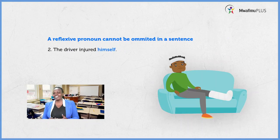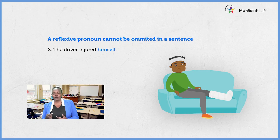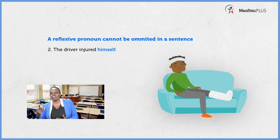Another sentence showing how we use a reflexive pronoun in a sentence, whereby if it is omitted the sentence is incomplete. Let us read: the driver injured himself. Now let us read it having omitted the word himself — the driver injured. You realize the sentence is not complete; we don't know what was injured. Until you put that reflexive pronoun in is when you realize it is the driver who is injured. So: the driver injured himself.